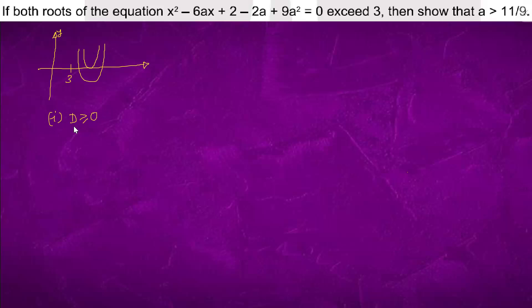and second, f(3) > 0. These conditions along with D ≥ 0 imply that -b/2a > 3. We will solve these conditions.